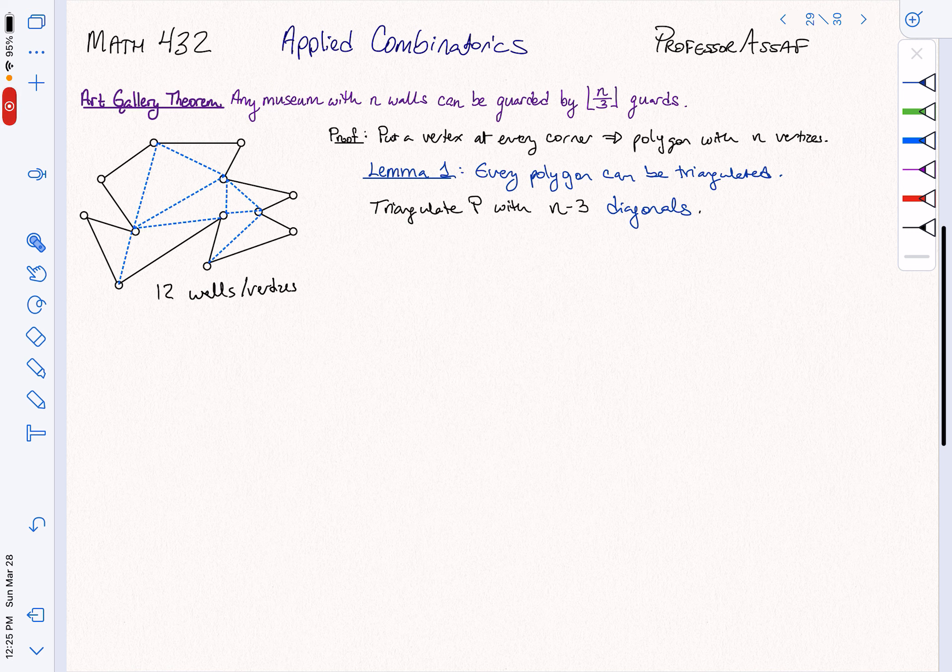Well, what I'm going to do next is I'm going to color the vertices of my graph. So let's put that as a lemma that I can actually do it. So lemma 2 says that a triangulation, the triangulation will help us with the coloring, a triangulation of a polygon is 3 colorable.